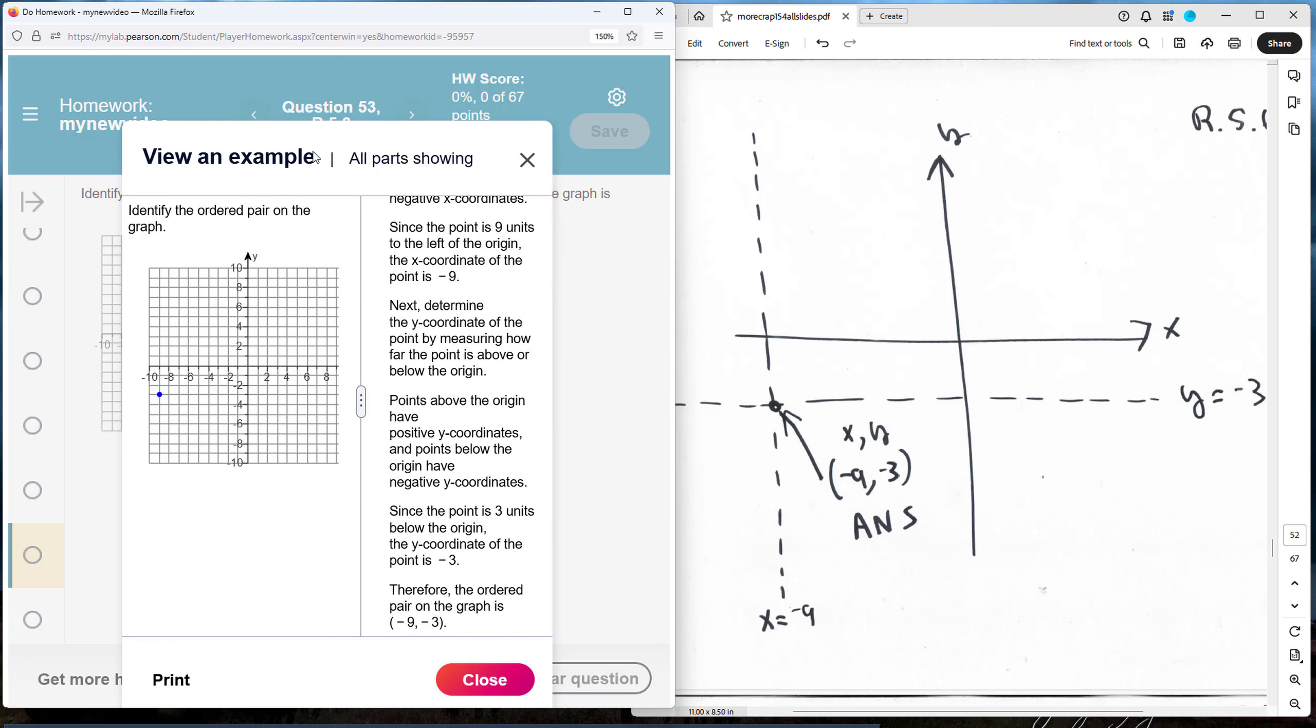This is R.5.6, identify the ordered pair on the graph. So we see the location of an ordered pair. The ordered pair is going to take where the first number in the ordered pair is the x coordinate and the second number in the ordered pair is the y coordinate.